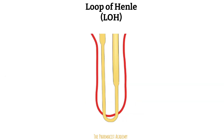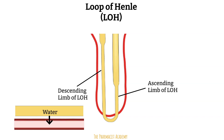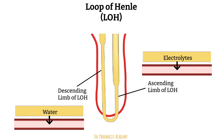Next is the loop of Henle, which is divided into the descending limb and the ascending limb. These limbs have different functions and reabsorb different molecules. The descending limb is mainly responsible for water reabsorption, while the ascending limb reabsorbs electrolytes. Water goes down the drain or pipe — this can help you remember that water reabsorption occurs at the descending limb. The removal of water at the loop of Henle is what makes the urine more concentrated.